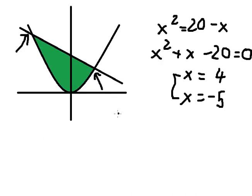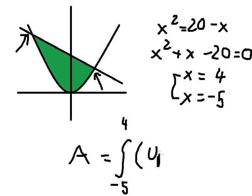Now we can set up the integration. We have the integral from negative 5 to positive 4, and we need to have the upper function minus the lower function.